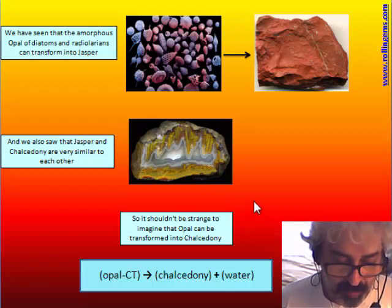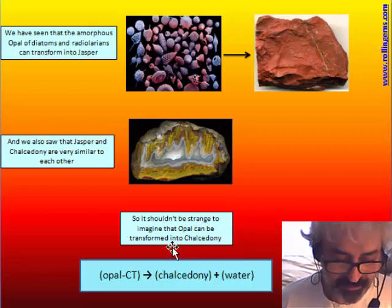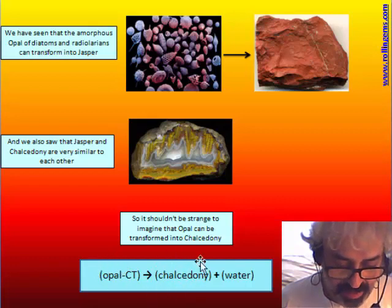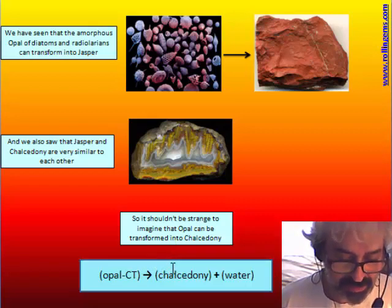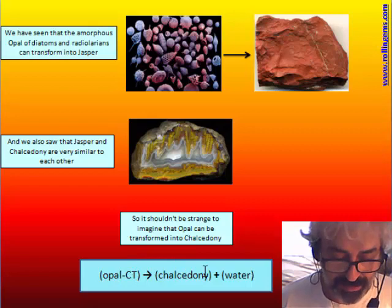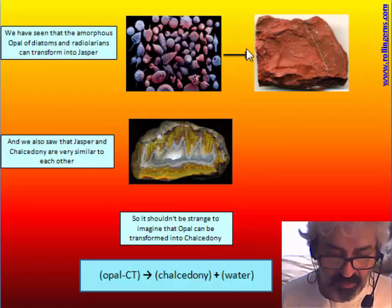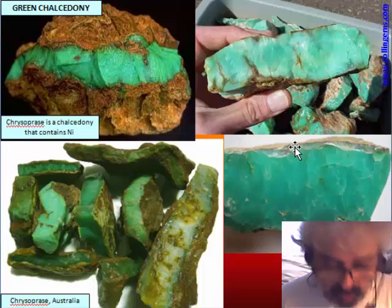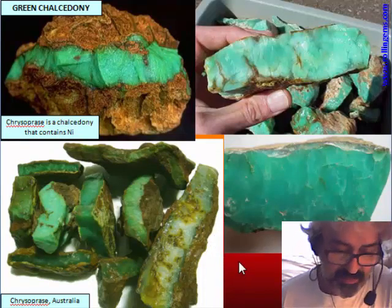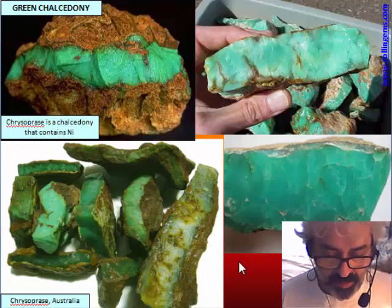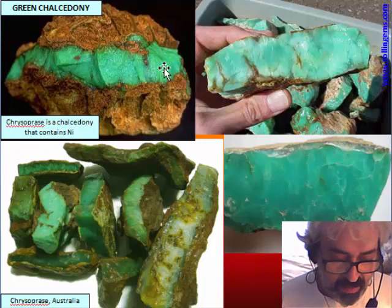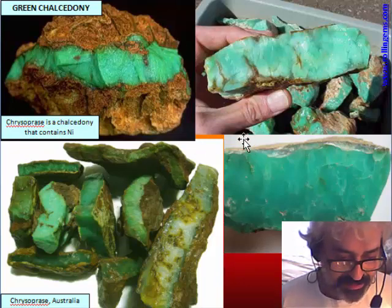It is not impossible to imagine that opal can be transformed into chalcedony instead of jasper. In this case it is opal CT — not from organogenic formation but opal that precipitates directly from solution. This opal can be transformed into chalcedony through a process very similar to the transformation of opal into jasper. We want to examine whether there is enough material to support this hypothesis. The most important colored chalcedony is the green one.